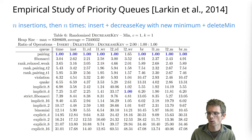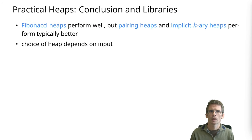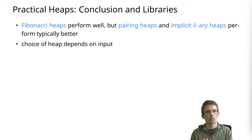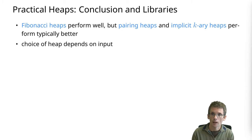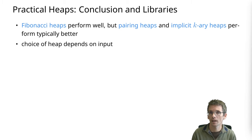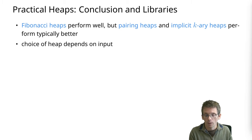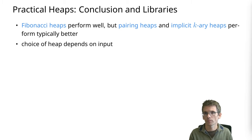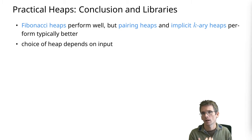Drawing conclusions: Fibonacci heaps are actually not that bad and perform well. The only reason you wouldn't use them is that, at least in these experiments, either pairing heaps or implicit k-ary heaps always outperform them. Which one you want to choose depends on the input — specifically, how many decrease-key operations you expect.